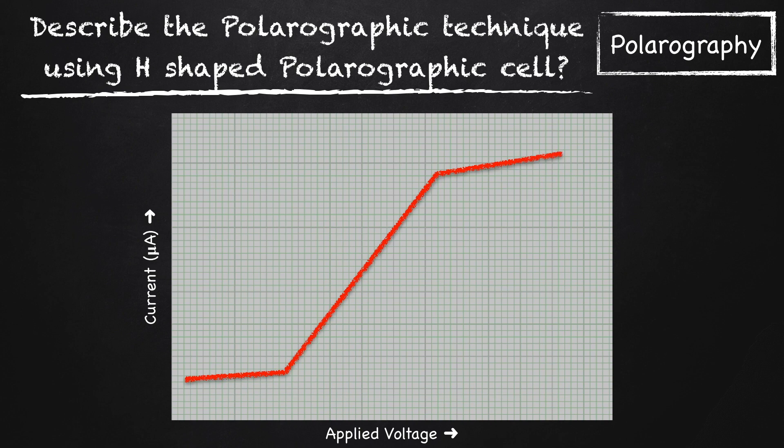The graph thus obtained is known as a polarogram. As half-wave potential is characteristic of each ion present in solution, we can perform qualitative analysis, and with the help of diffusion current, we can perform quantitative analysis.